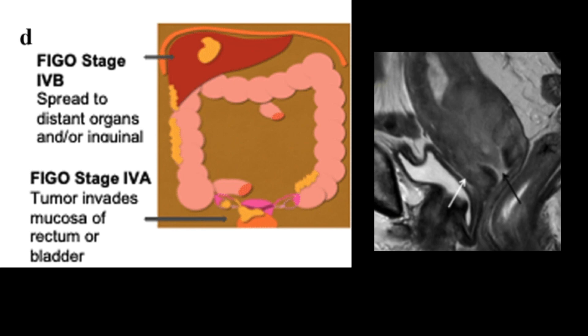Last is stage 4. In stage 4a, there is invasion of the mucosa of the rectum or bladder, and in stage 4b, there is spread to distant organs or non-regional lymph node stations.